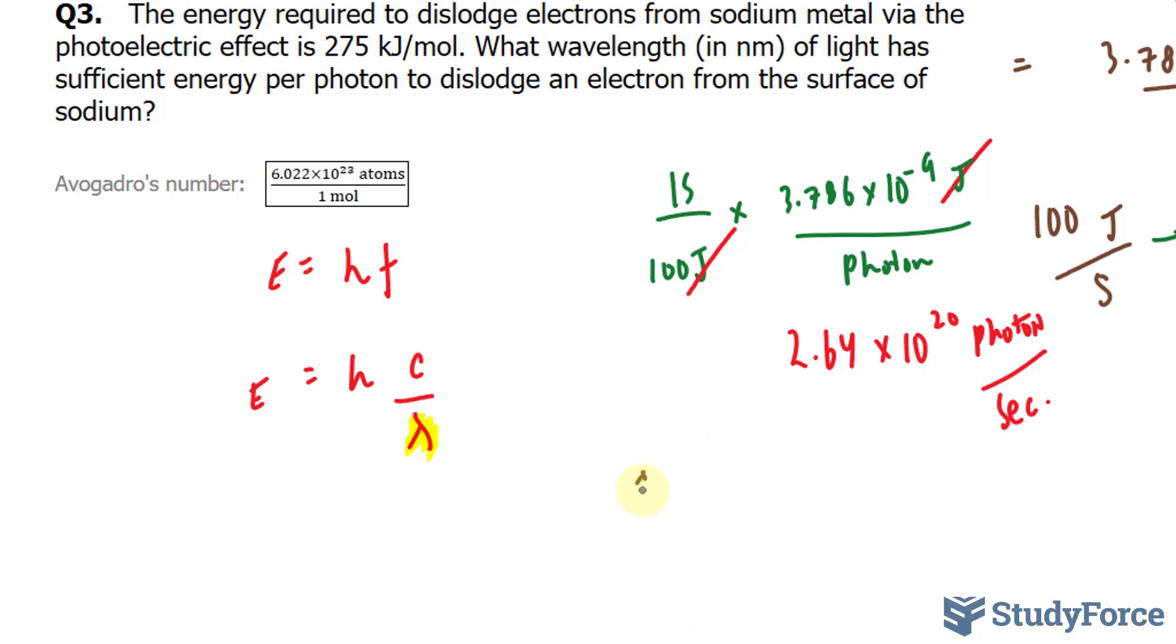So let's go ahead and do that first. We have 275 kilojoules per mole. I'll multiply this by Avogadro's number, which is right here. And instead of the moles being at the bottom, I'll put them at the top and the atoms at the bottom. So I end up with 1 mole per 6.022 times 10 to the power of 23 atoms.